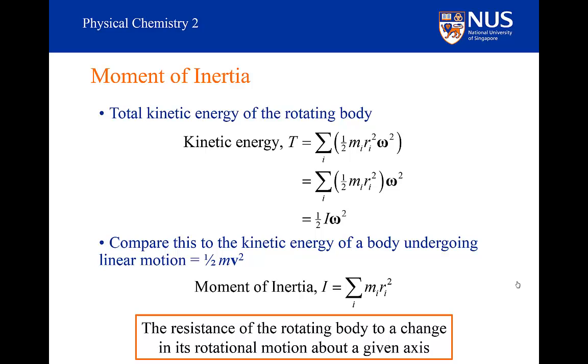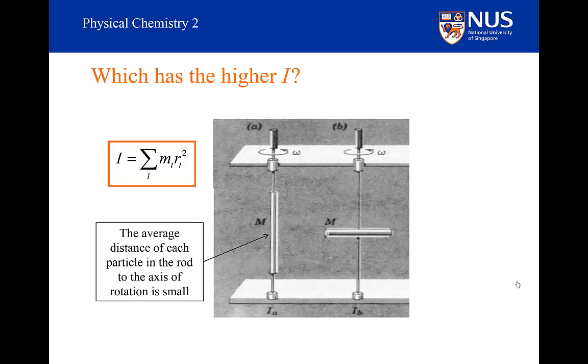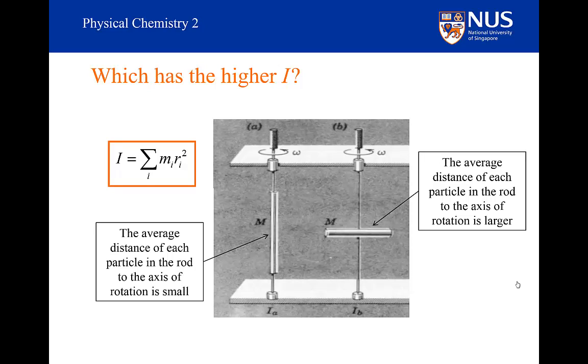So if we go back to our rotating steel rods, we can see why the first rod has a smaller moment of inertia, and why it is much easier to rotate. We can see that each particle is much closer to the rotational axis in the rod on the left than it is in the rod on the right. So the average distance in the first configuration is much smaller than in the second. So the moment of inertia is smaller, even though they are identical rods. The moment of inertia is dependent on the choice of rotational axis.